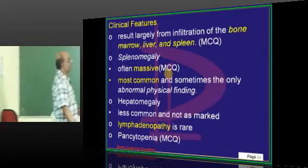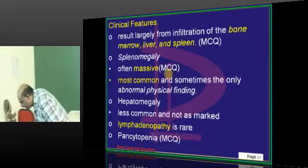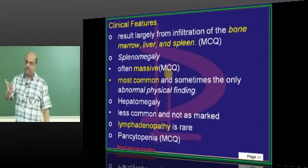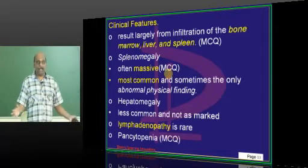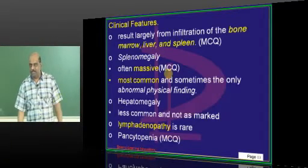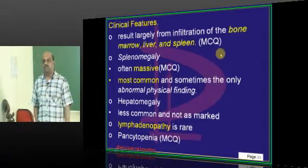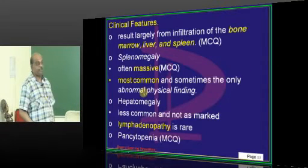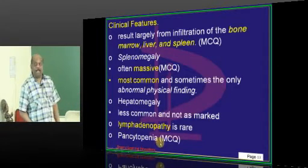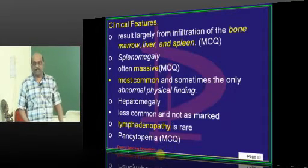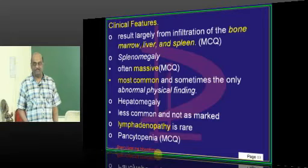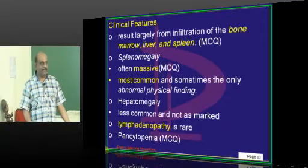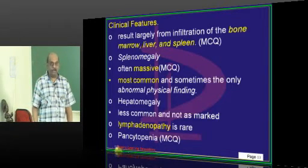What are the important clinical features? Bone marrow, liver, and spleen are all involved. Splenomegaly is in fact massive in hairy cell leukemia — if asked the most common physical finding, massive splenomegaly is your answer. There can be hepatomegaly, lymphadenopathy, and pancytopenia — another important feature. Generally, the patient presents with pancytopenia and splenomegaly, and the splenomegaly itself can explain the pancytopenia.